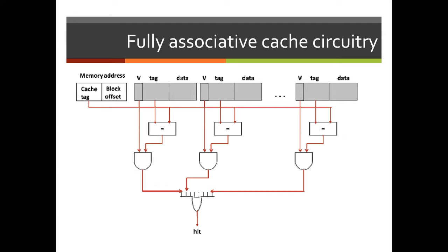Within a fully associative cache, parallel tags are used for matching, and each block in the cache represents an independent cache. Tag matching occurs in parallel to determine a hit or miss. Given a memory block, it can be present in any of the cache blocks — we have one-to-N cache blocks available. Once a hit occurs, the data from the matched block is sent to the CPU.